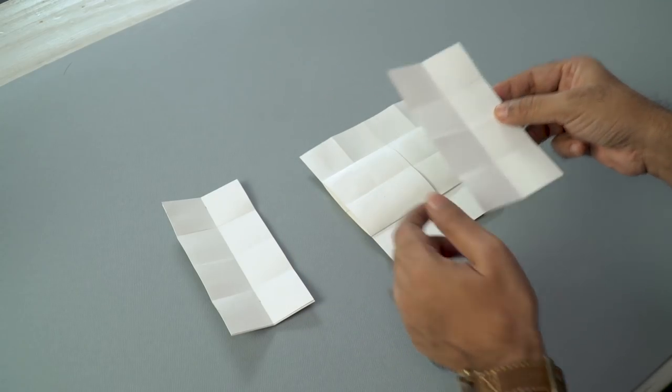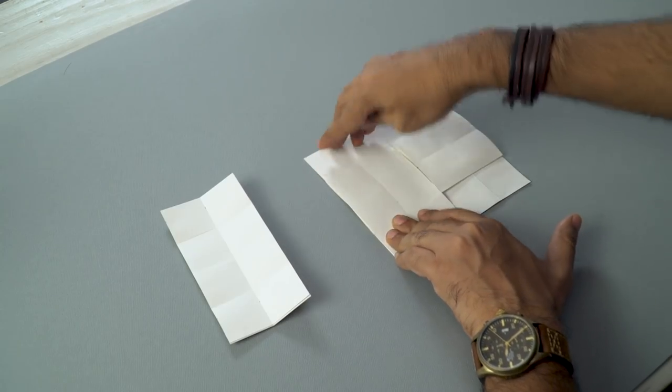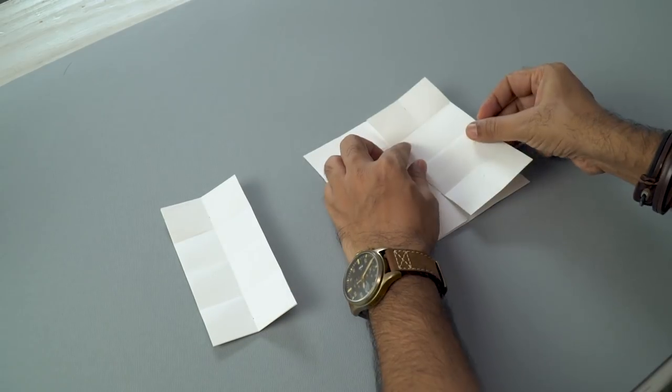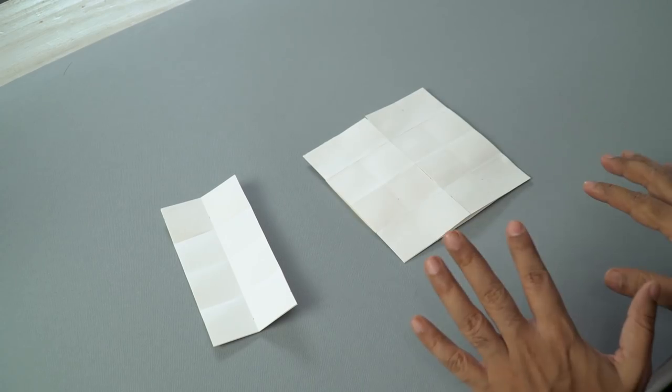Okay. So now we'll stick two more pieces. Again, we will place them vertical like this. Take another one. Align it. And then press it down. And we are done with six of our pieces.